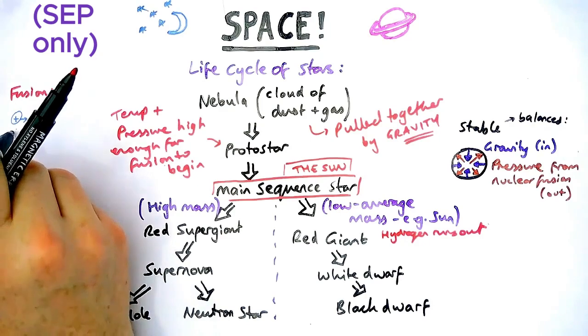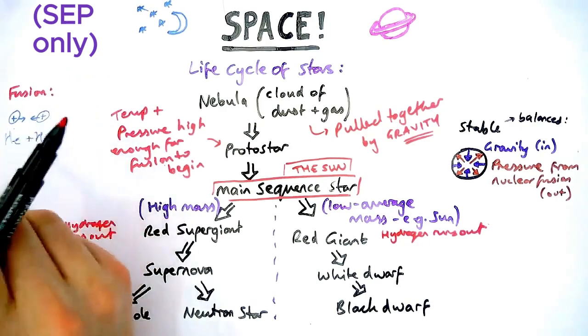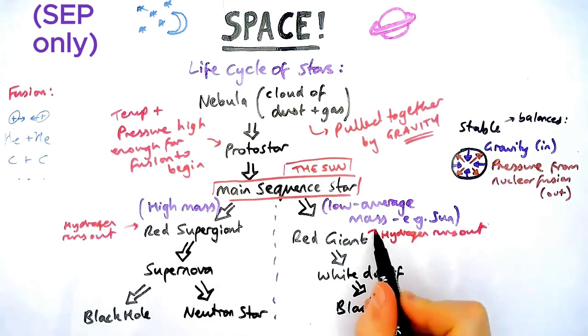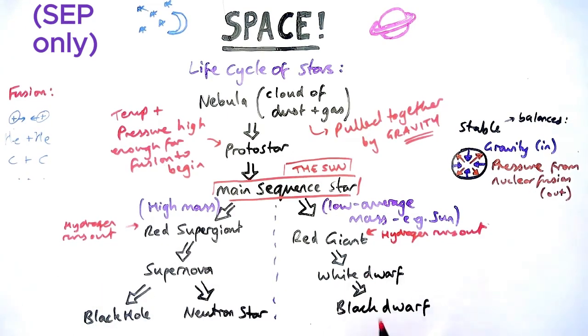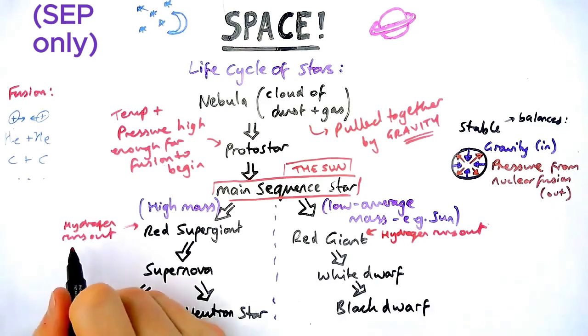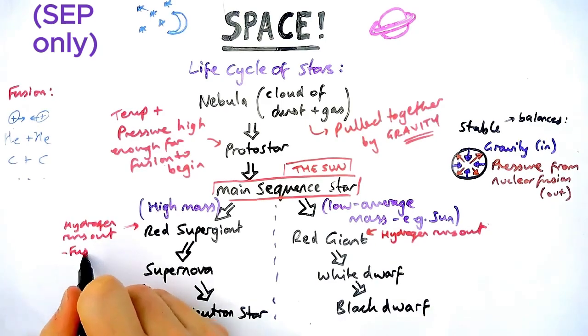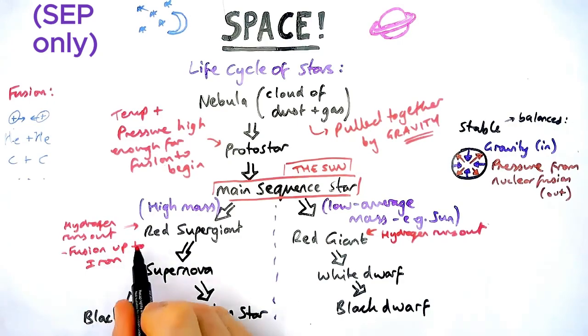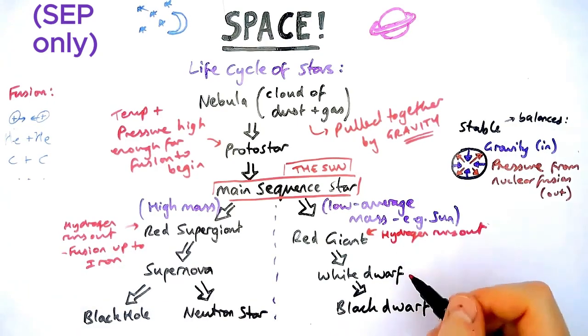What will start happening is it starts to fuse heavier and heavier elements. So instead of hydrogen, hydrogen, it might be helium and helium. Then it might be carbon. It might be oxygen. These heavier elements mean that it expands into a red giant and it has a different color. In the red supergiant phase, this happens to elements all the way up to iron. So iron is quite heavy element. That's weight number 29.